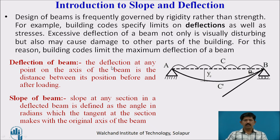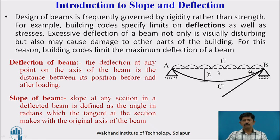The deflection at any point on the axis of the beam is the distance between its position before and after bending. This is the initial position of the beam and this is the final position after load is applied. For a simply supported beam with UDL, the maximum deflection is at the center and it reduces near the support.